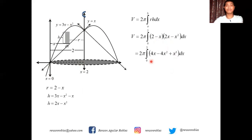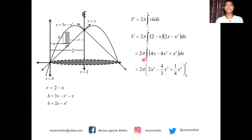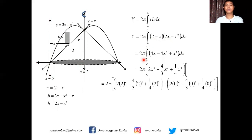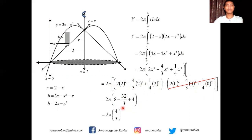Simplifying the integral, we have 2π ∫(4x − 2x² − 2x² + x³) dx = 2π ∫(4x − 4x² + x³) dx, evaluated from 0 to 2. Integrating: 2x² − 4x³/3 + x⁴/4, evaluated from 0 to 2. Substituting x = 2: 2(4) − 4(8)/3 + 16/4 = 8 − 32/3 + 4 = 4/3. Since x = 0 gives 0, multiplying by 2π, the volume is equal to 8π/3 cubic units.